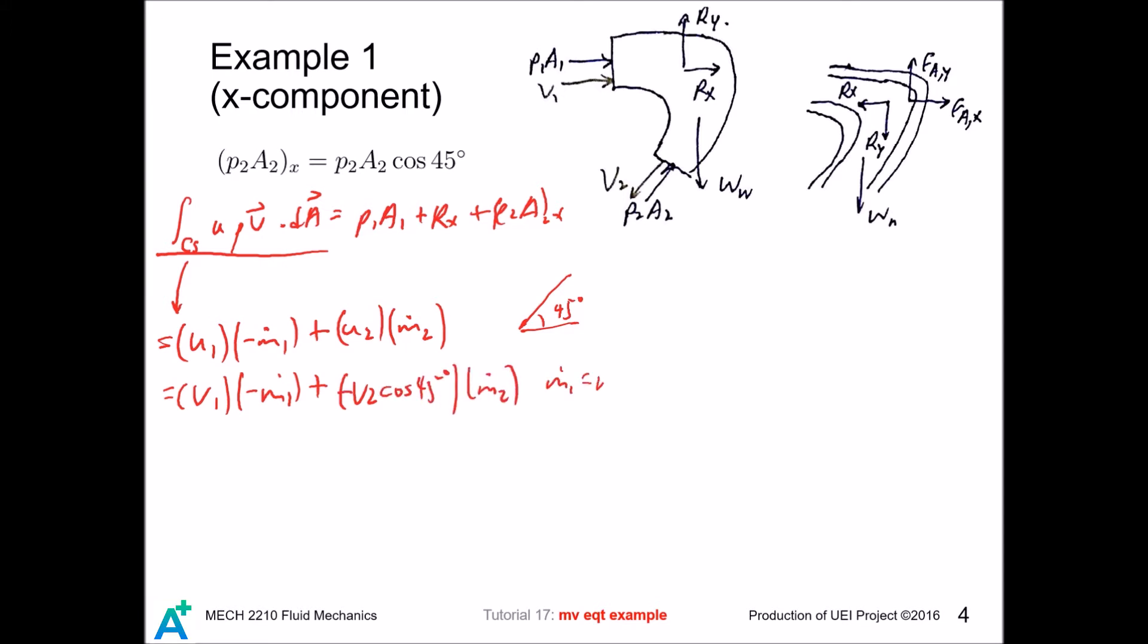And finally, m1 equals m2, so we can factor that out. By looking at the nozzle, we can immediately see that the x component of the anchoring force equals rx, so that's fAx equals rx.